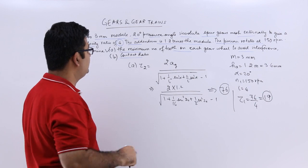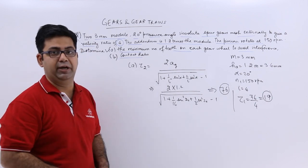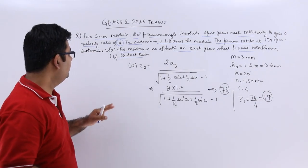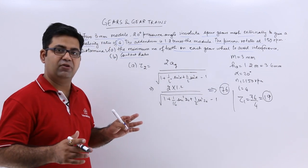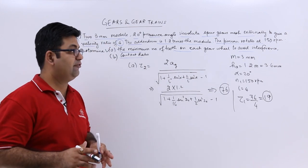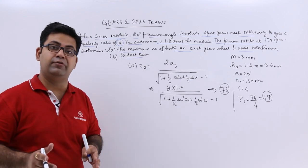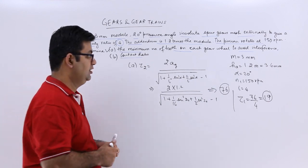Now let's come to the second part and talk about the contact ratio. We need to find out the value for the addendum radius for pinion and for gear, and also we need to find out the pitch circle radius.